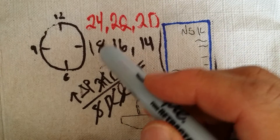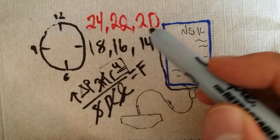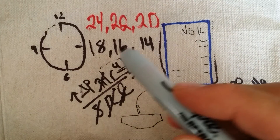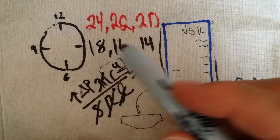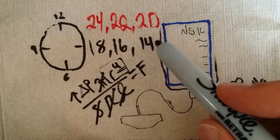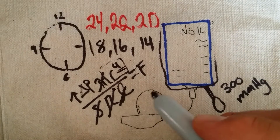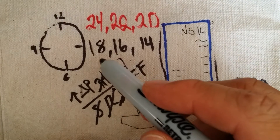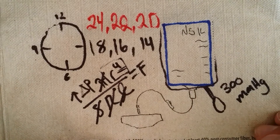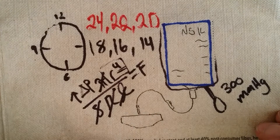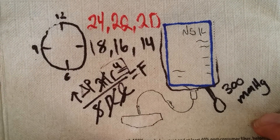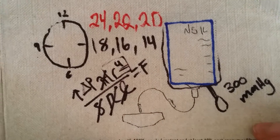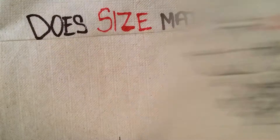With every increase in radius, you increase flow to the fourth power. It's an incredible increase in flow rate with an increase in catheter radius. Pretty cool.